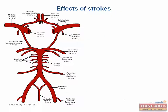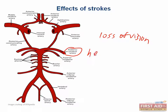For Step 1, the PCA is relatively simple. It goes to the occipital lobe, so you would have loss of vision on the contralateral side. Technically, it would be a hemianopsia, and importantly, you would have macular sparing.